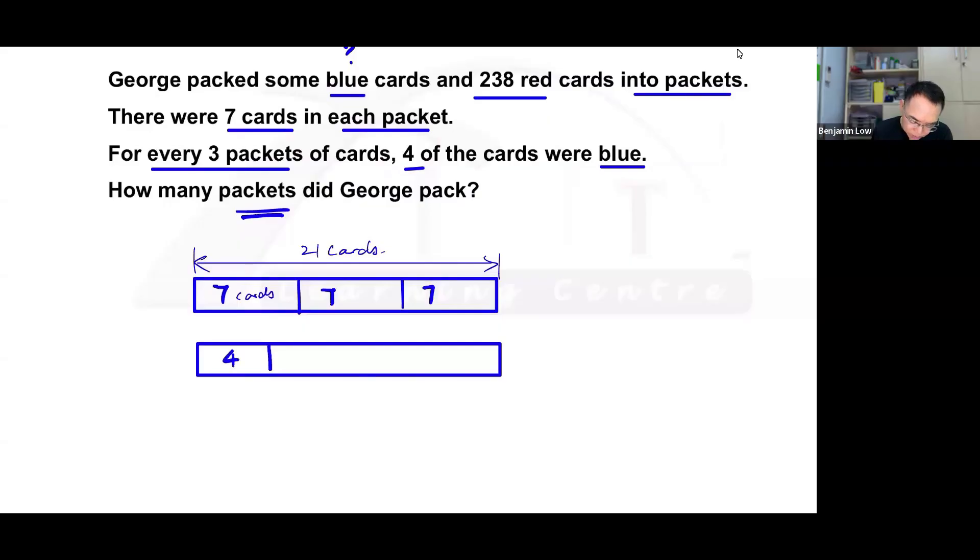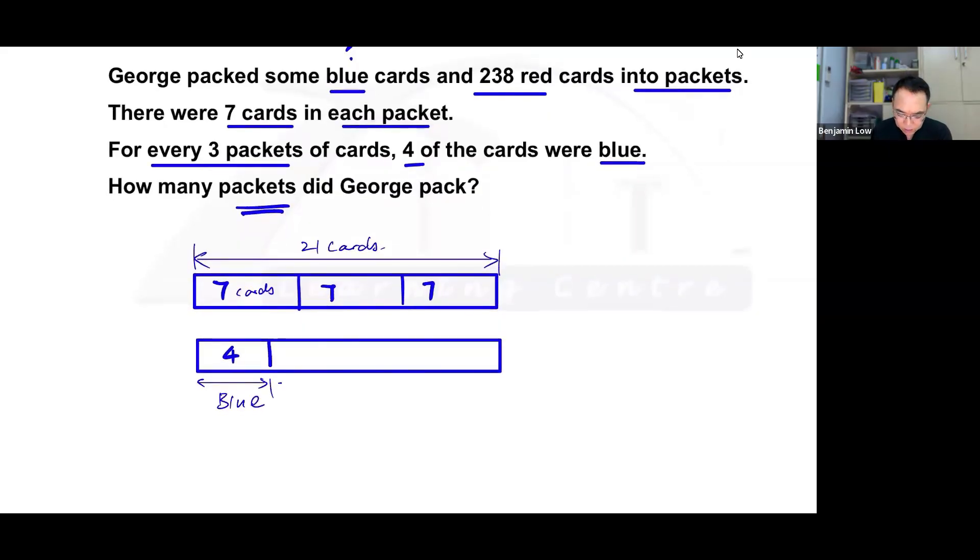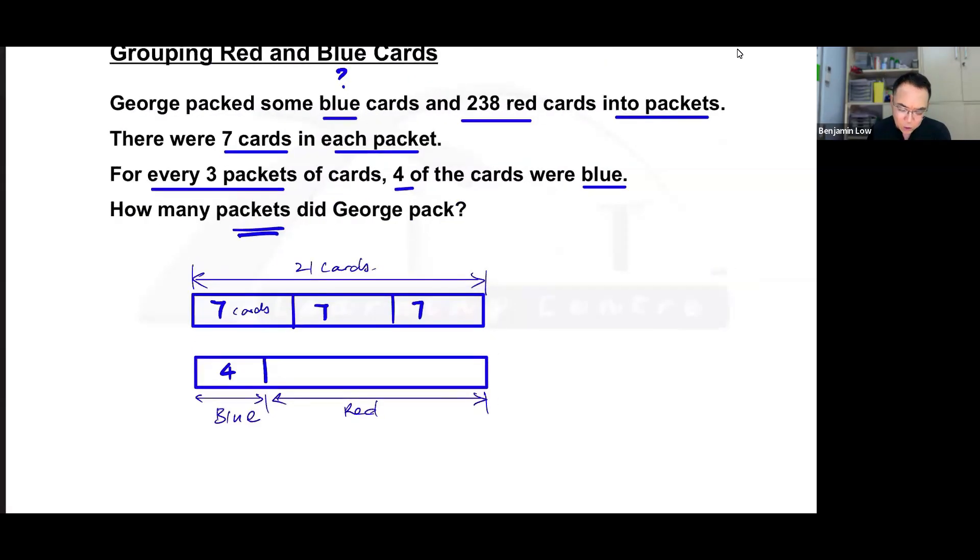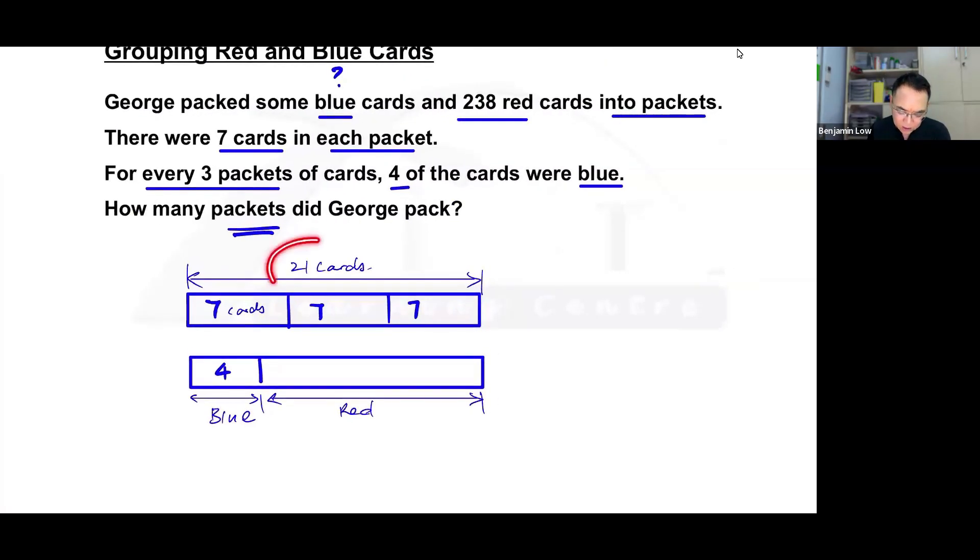If 4 of them are blue, then what does this represent? The answer is of course red. Since I know that there are 21 cards and this is 4, then how many red cards are there? The simple answer is 21 minus 4 equals 17.